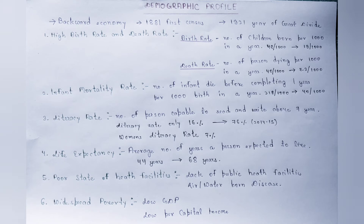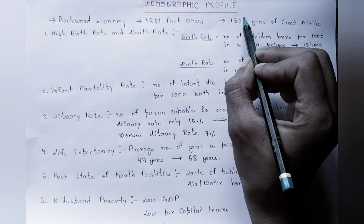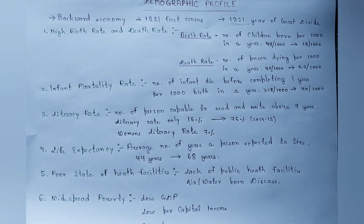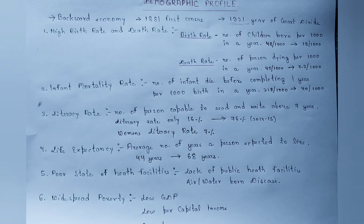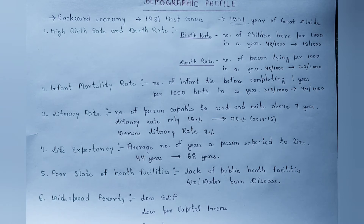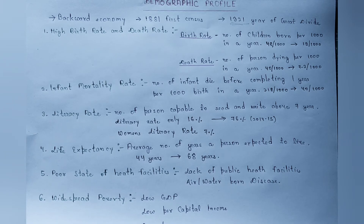1921 is the year of great divide। 1921 को year of great divide क्यों कहा जाता है? Actually, 1921 से पहले जितने सारे census हुए थे उनमें India का population continuously increase या decrease कर रहा था — perfectly यह नहीं था कि वो increase कर रहा है या decrease। लेकिन 1921 के बाद जो हमारा population का growth rate था वो continuously increase किया है; 1921 के बाद कभी भी हमारा population decrease नहीं किया, जिसके कारण हम 1921 को year of great divide कहते हैं।